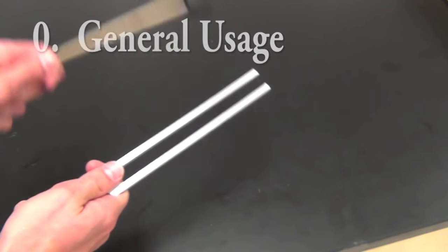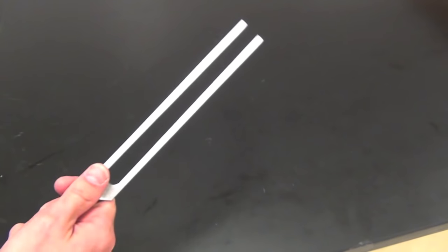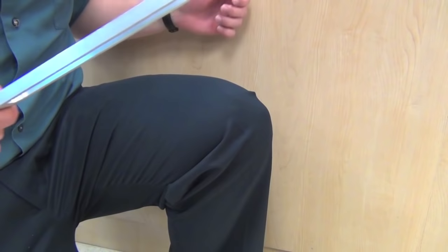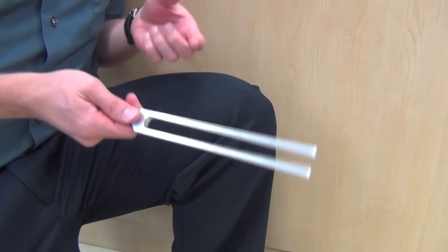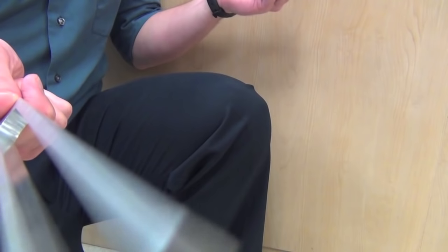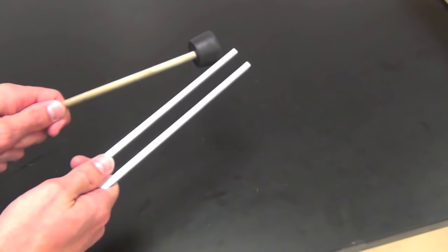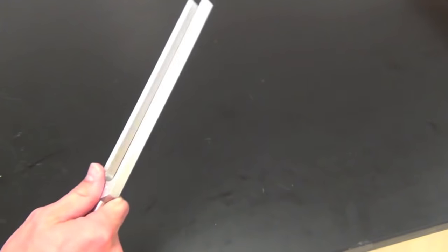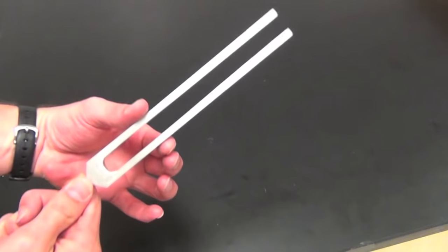When using a tuning fork, hold it by the base and strike the end of the tines with a rubber mallet. If a mallet is unavailable, strike it against something moderately soft like a bent knee or a mouse pad or the edge of a table. Once it's vibrating, touch the lower part of the tines near the joint to dampen out the unwanted higher harmonics.